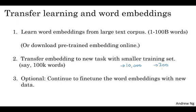And then finally, as you train your model on your new task, on your named entity recognition task with a smaller labeled dataset, one thing you can optionally do is to continue to adjust the word embeddings with the new data. In practice, you would do this only if your new task has a pretty big dataset. If your labeled dataset for step 2 is quite small, then usually I would not bother to continue to fine-tune the word embeddings.